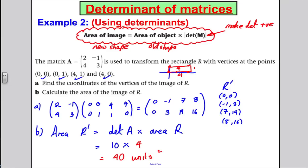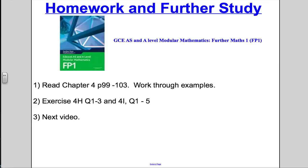We've worked out the area of a shape we have no idea what it looks like, using this rule. To finish off, read Chapter 4, pages 99 to 103, do Exercise 4H questions 1 to 3, and Exercise 4I questions 1 to 5. That is all we have to do on matrices — thank you very much for watching.